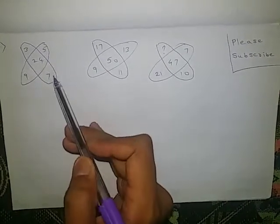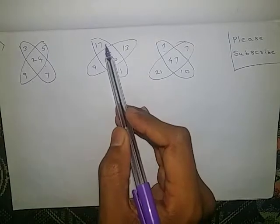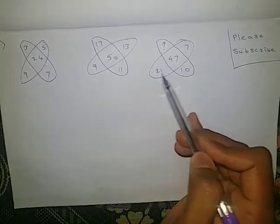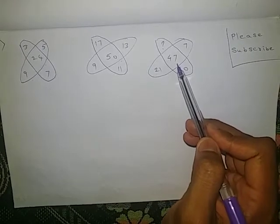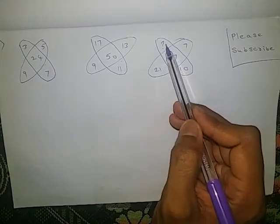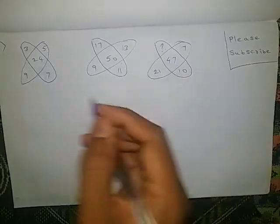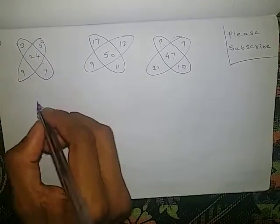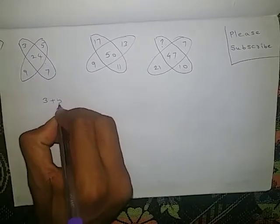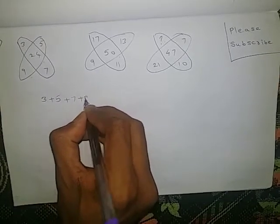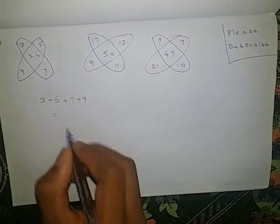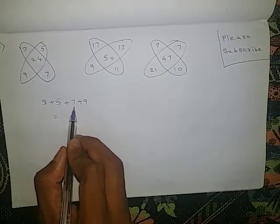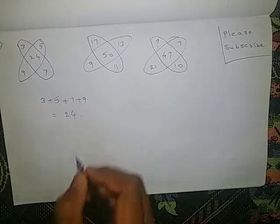Let us check one more question. 3, 5, 7, 9 — middle number is 24. 17, 13, 11, 9 — middle number is 50. 7, 10, 21 — middle number is 47. We need to find the missing number. For the first one: 3 plus 5 plus 7 plus 9 equals 8, plus 7 is 15, plus 9 is 24.